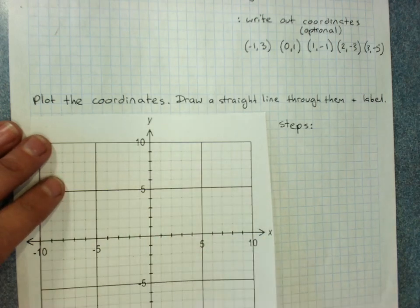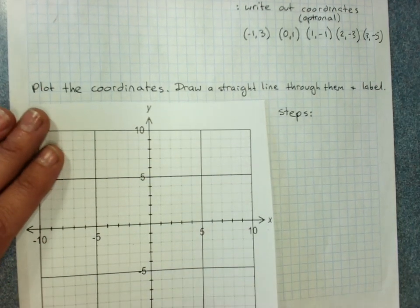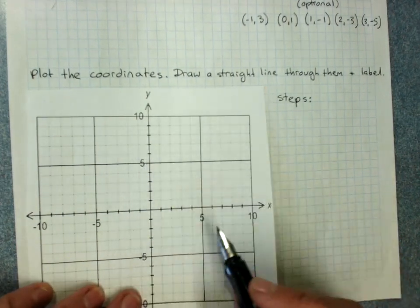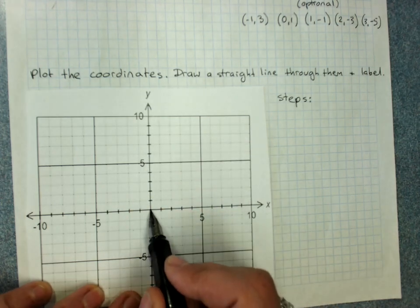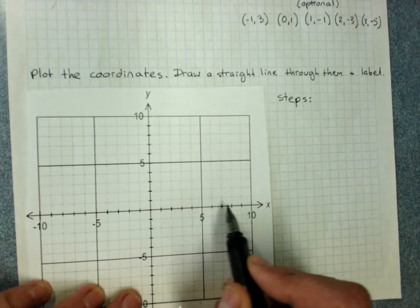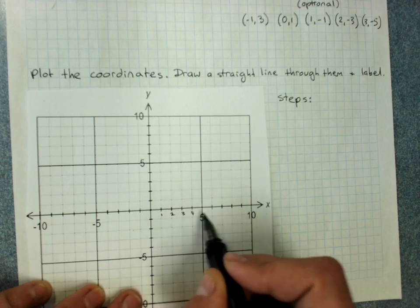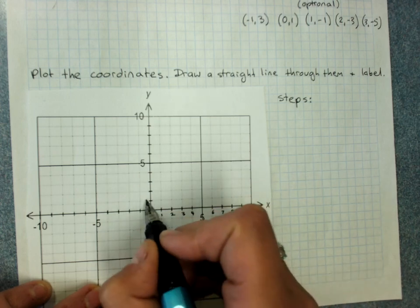Now plot the coordinates. Now I've given you a number plane where not all the numbers are marked. If it would help you, put in all the other numbers. So we start at 0, put in the positive ones first because they're easier.